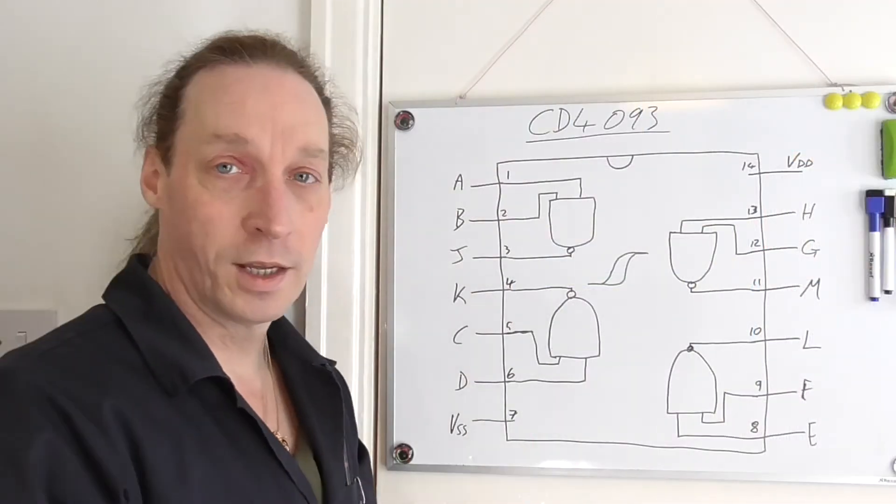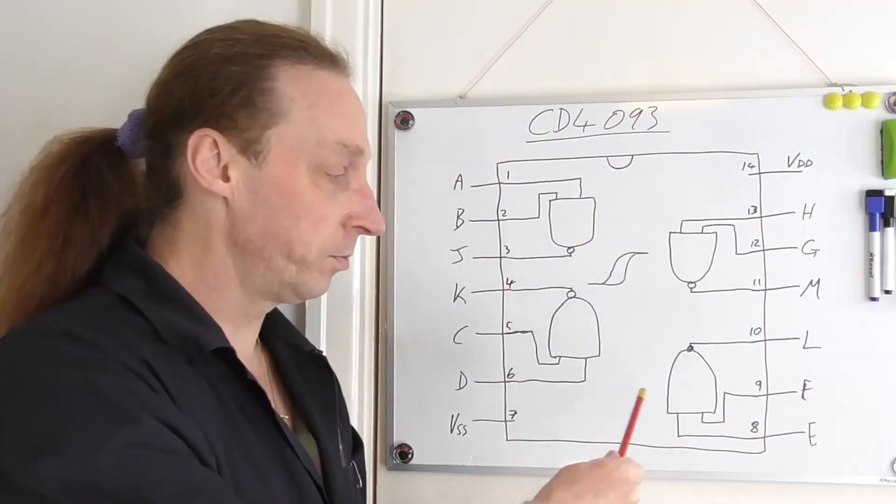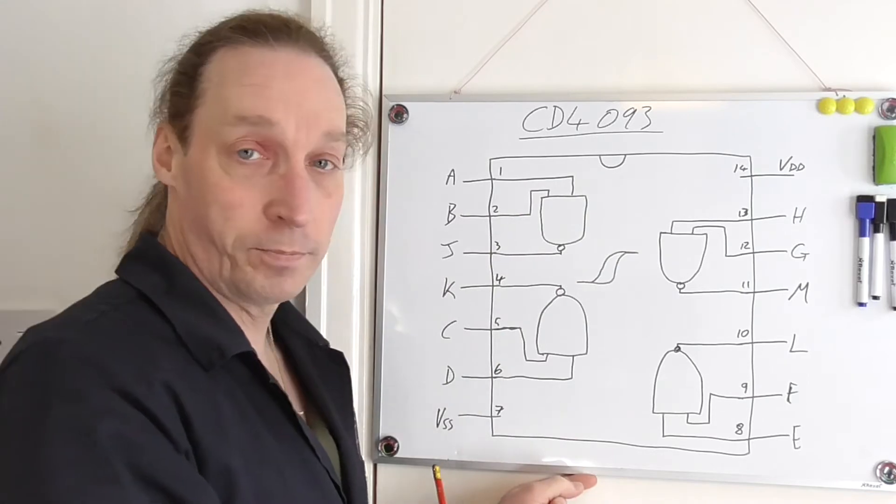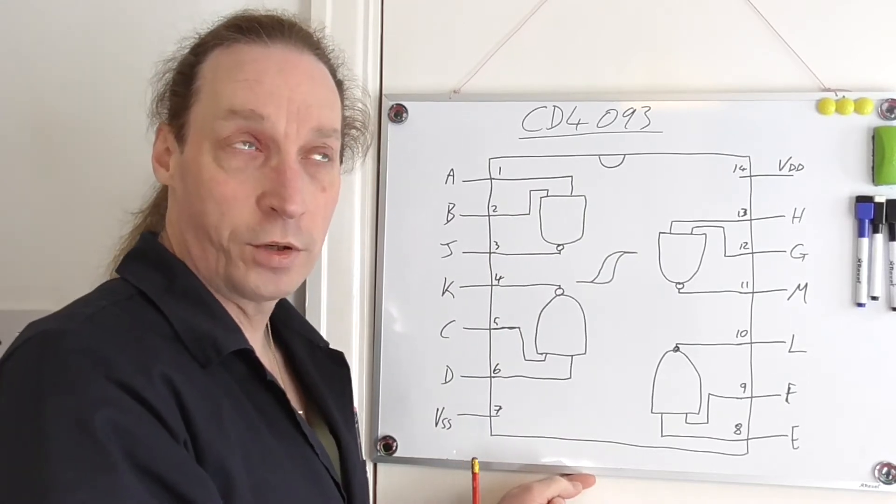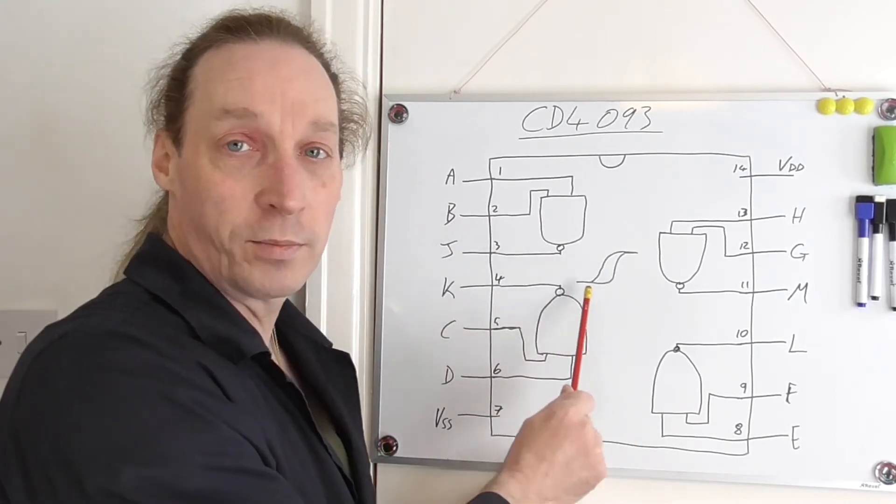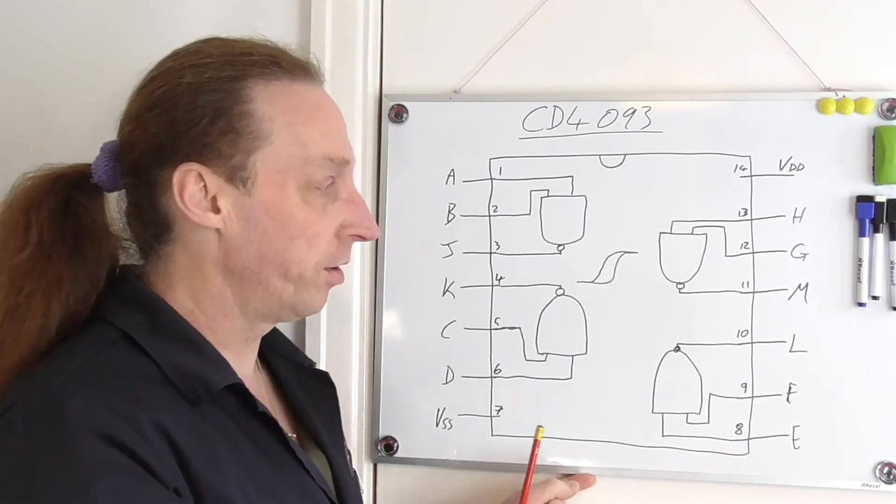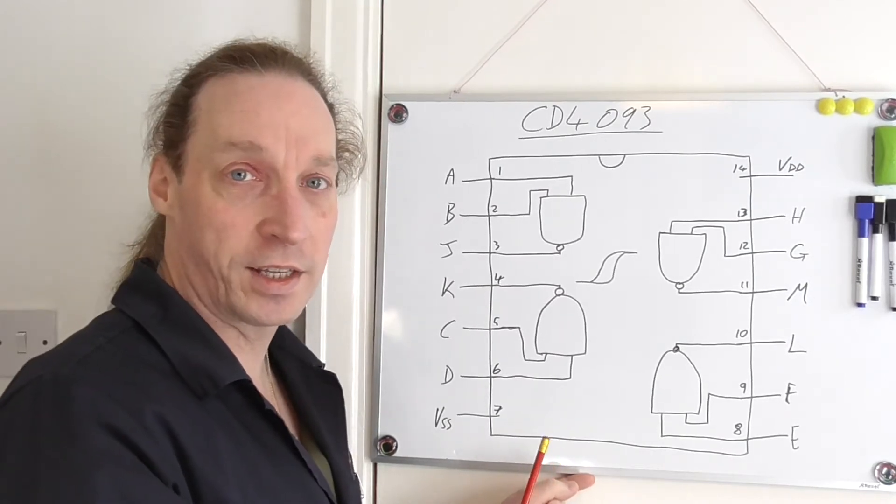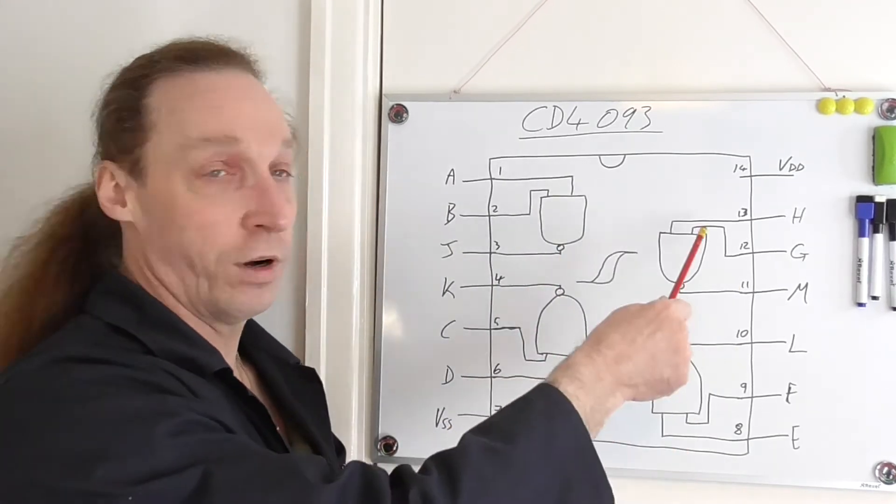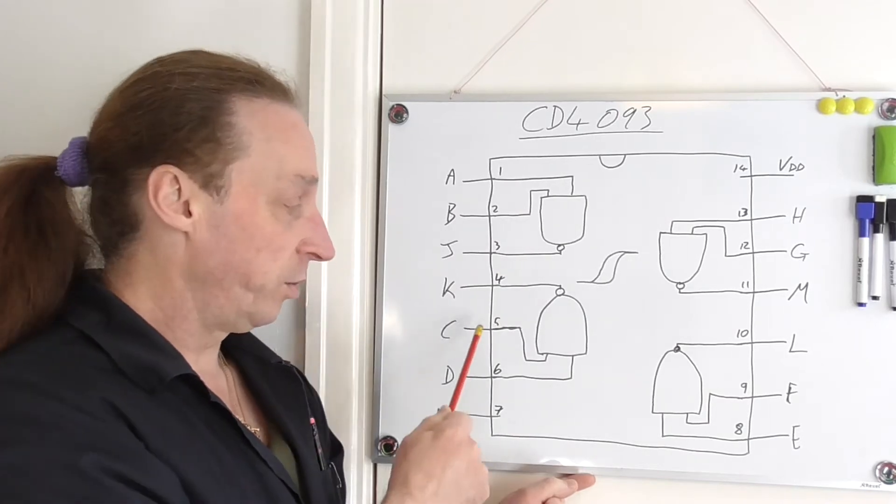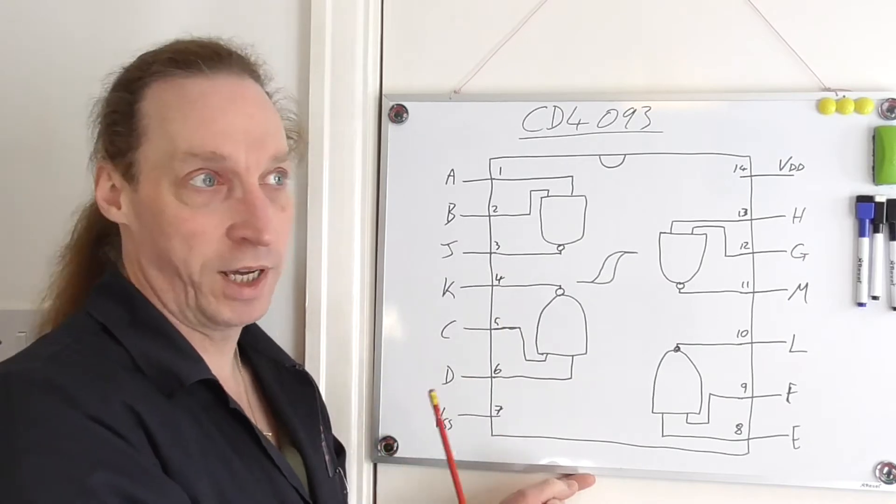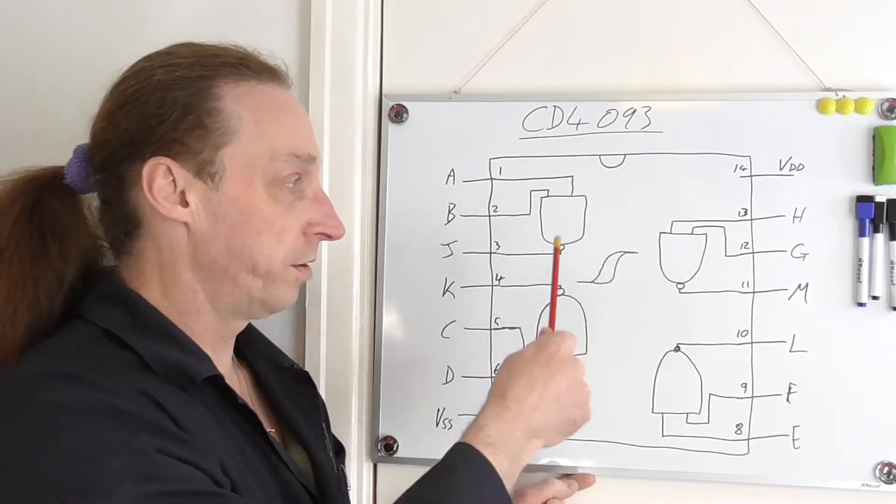Okay, so we've got the whiteboard drawn up with the actual IC, it's a CD4093 quad two-input NAND Schmidt trigger. I've put that symbol on here because that's the sort of symbol they tend to put on these things for showing that it has Schmidt trigger circuitry inside them. You've got four of them per IC, two inputs, one output per unit.